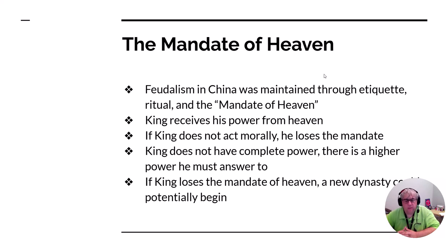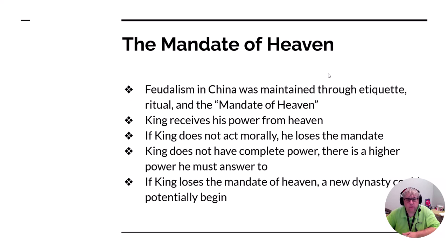Another concept from the western Zhou is the mandate of heaven. The king receives his power from heaven, and as a result is supposed to be moral and act in the best interest of his people. If the king is not moral and does not do the best for his people, the mandate is lost and he could be replaced. A group of people could claim that the king has lost the mandate of heaven and then overthrow him.